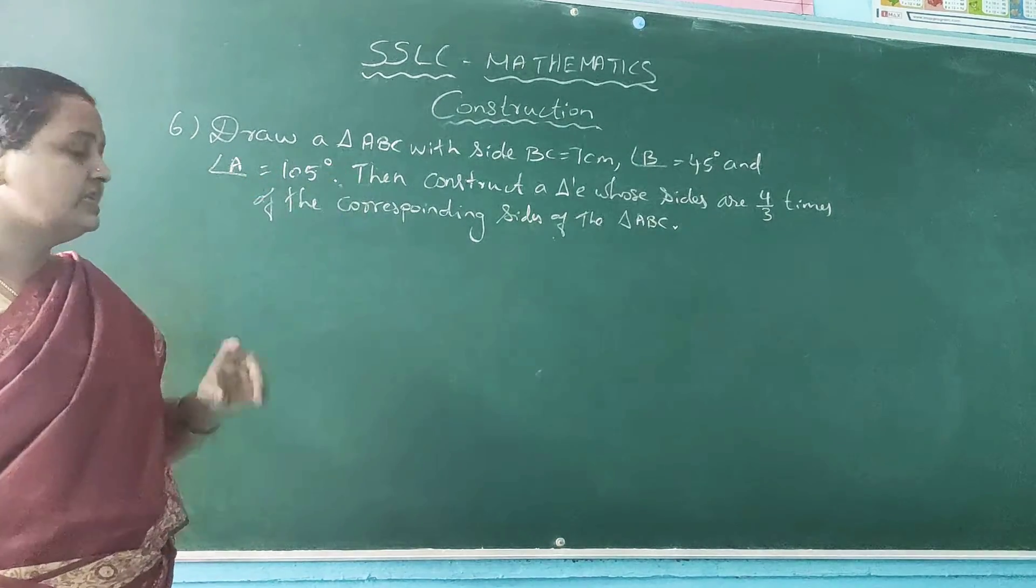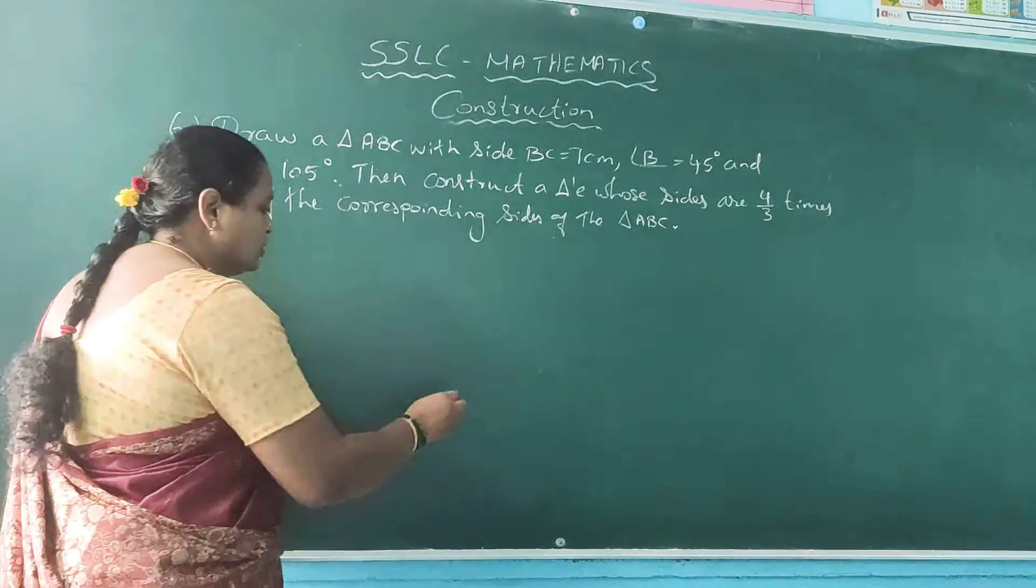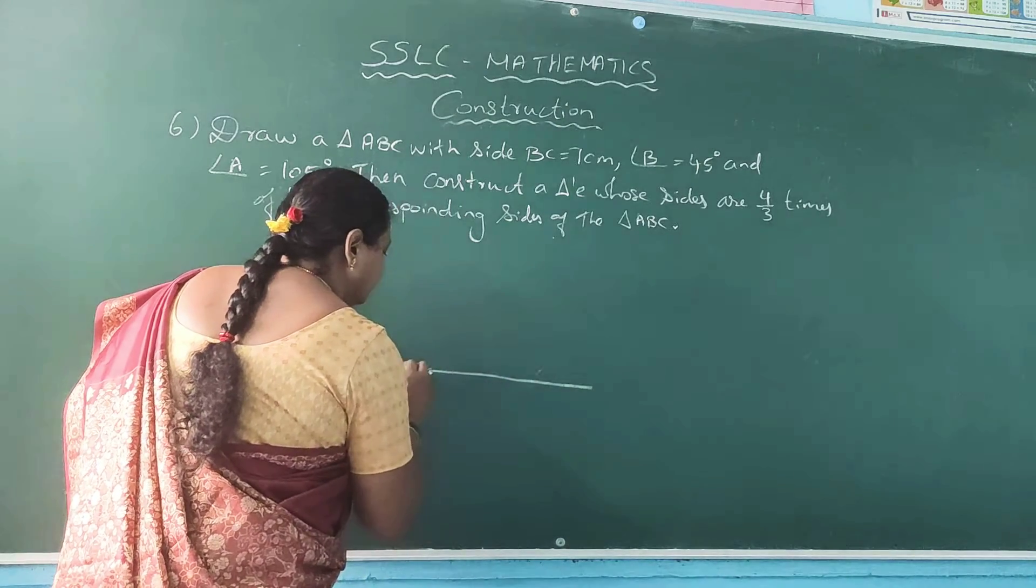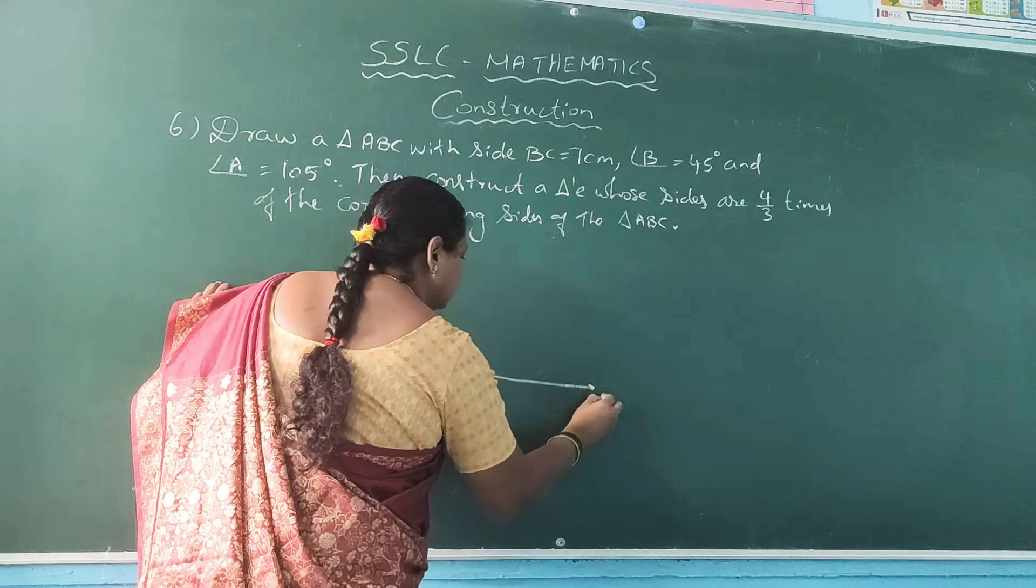So what is the side given? BC is equal to 7 cm. So draw a 7 cm straight length. This is BC, 7 cm we have drawn.